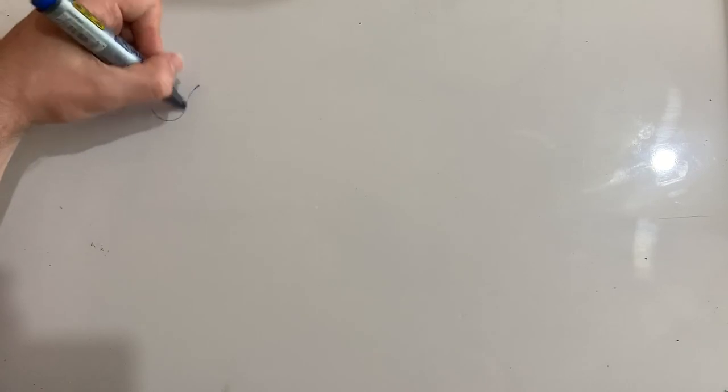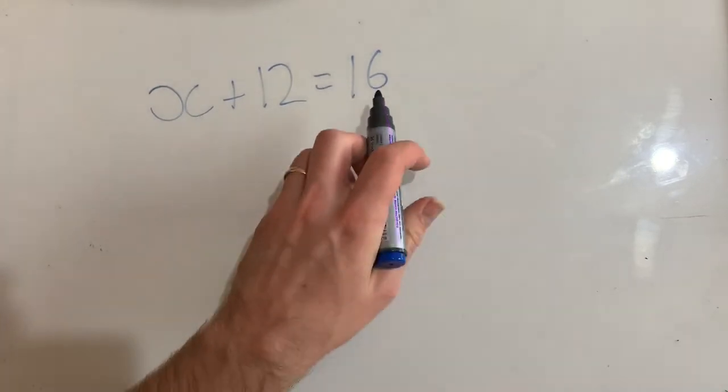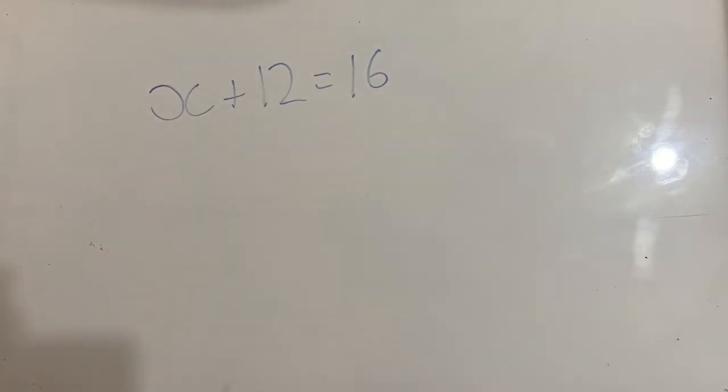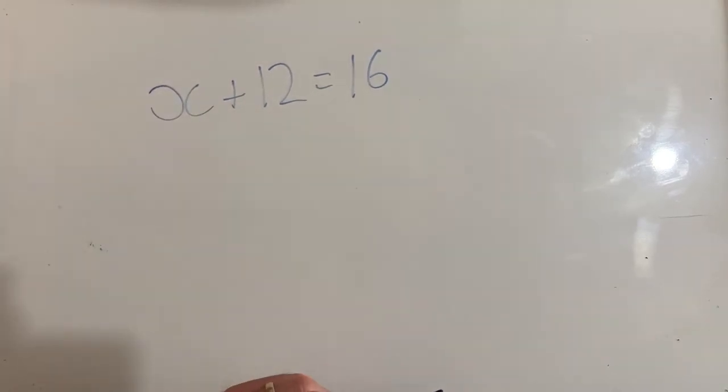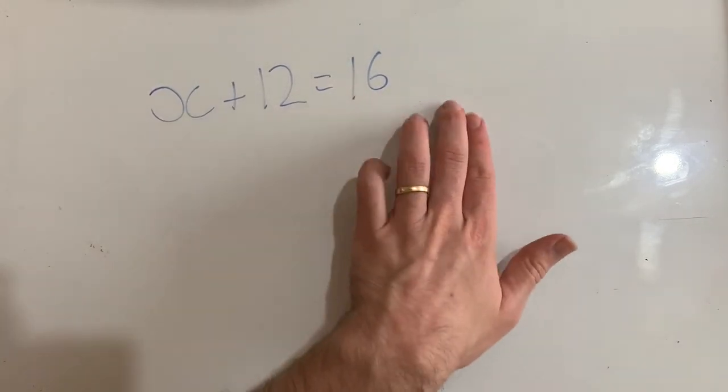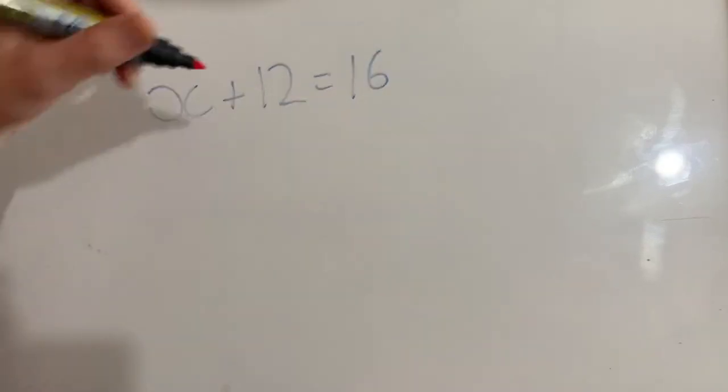Let's try x plus 12 equals 16. So I know that this side equals 16, and therefore this side also equals 16. Now I am adding 12 to x. So I want to get 12 onto this side so that I've got x all by itself. The way I do that, of course, is to jump it across.